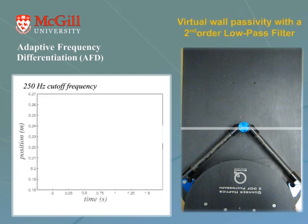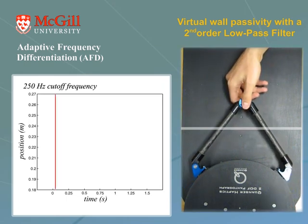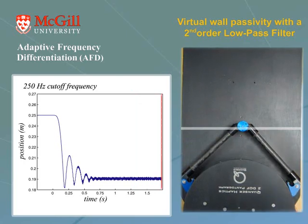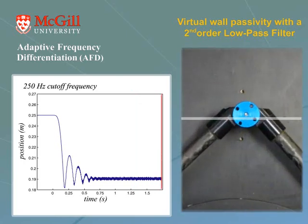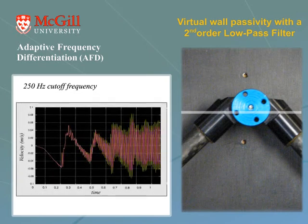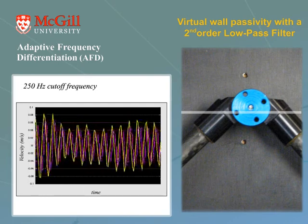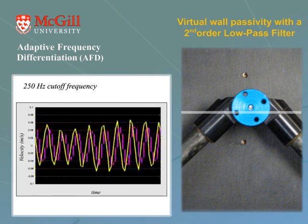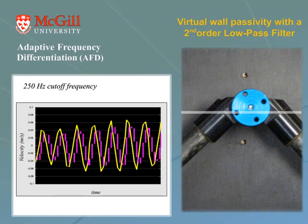Now, let's redo the experiment using a second-order low-pass filter. This time, because of the time delay, we experienced high-frequency oscillations. As the frequency of oscillation increases, the time delay of the low-pass filter becomes more significant, making the system active.